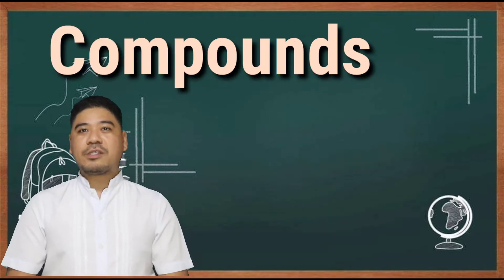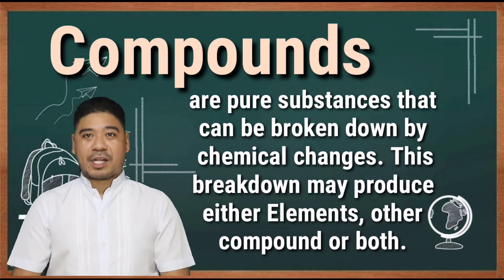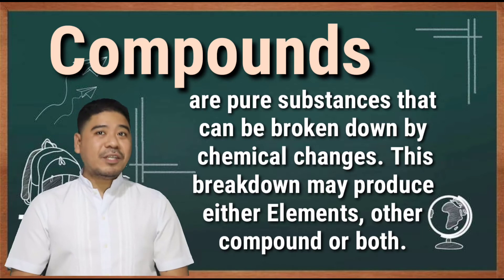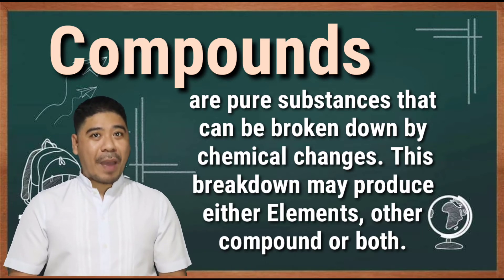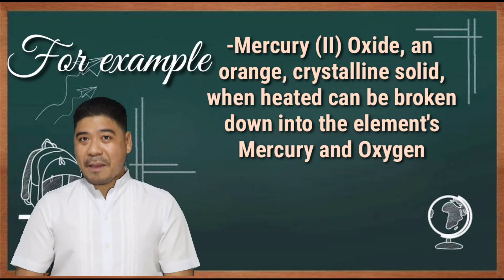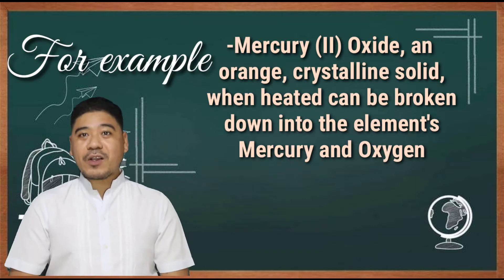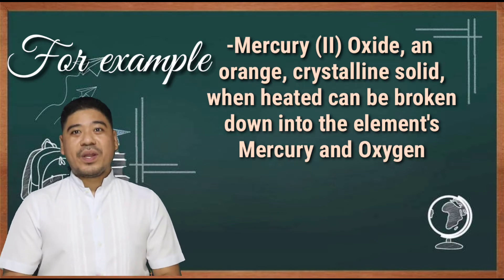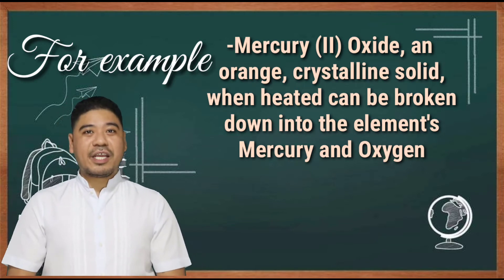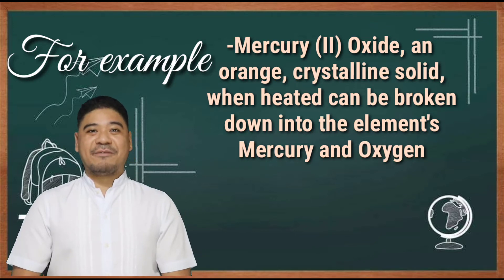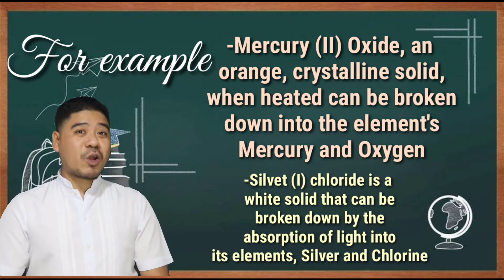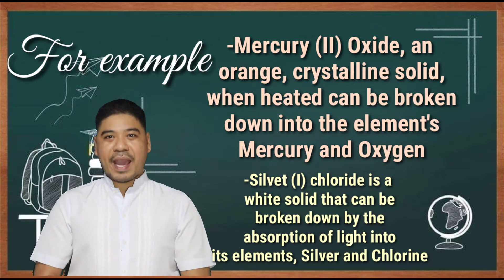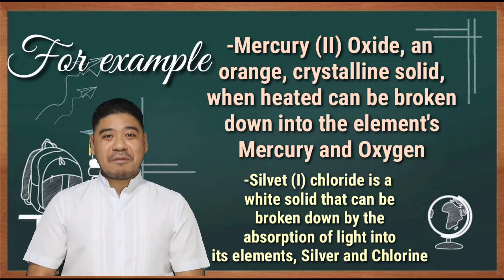Compounds are pure substances that can be broken down by chemical changes. This breakdown may produce either elements, or other compounds, or both. For example, mercury oxide, an orange crystalline solid, when heated, can be broken down into the elements mercury and oxygen. Silver chloride is a white solid that can be broken down by the absorption of light into its elements, silver and chlorine.